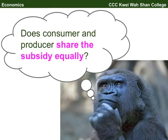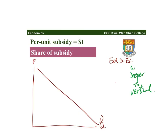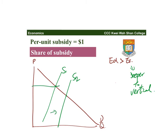The most difficult part is the share of the subsidy. As when we discussed the per unit tax burden, we compare the elasticity of demand and supply. Case one: elasticity of demand is bigger than elasticity of supply. We use a normal demand curve, and because elasticity of supply is smaller, we draw the supply curve steeper — closer to vertical. Then we draw two supply curves with an increase of supply.